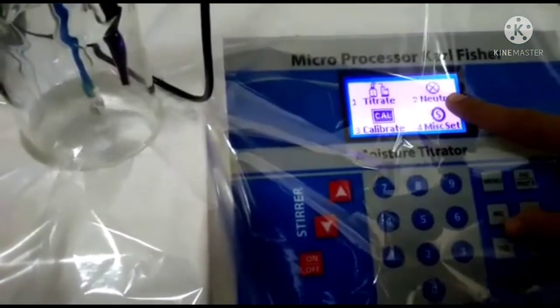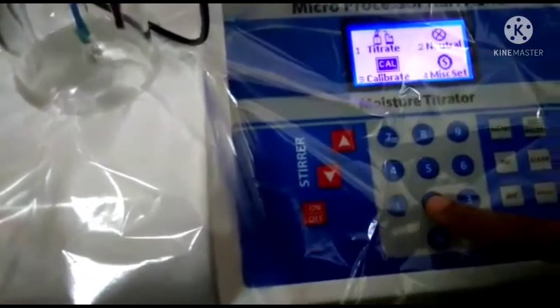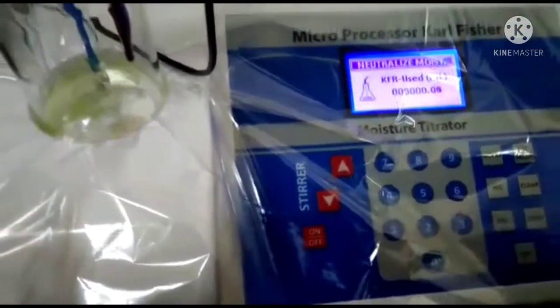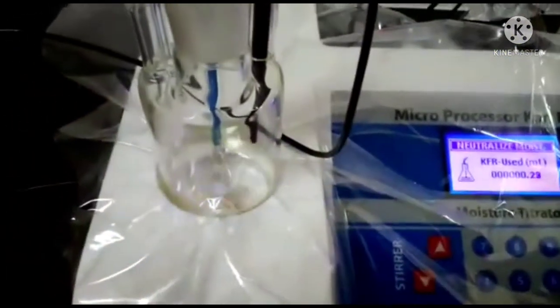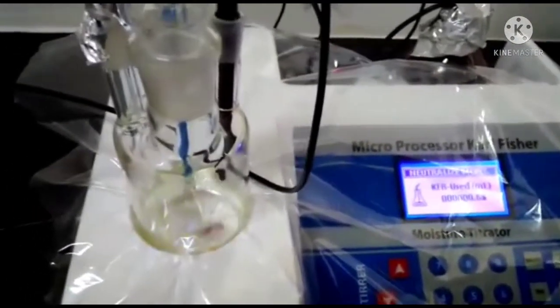For neutralization we have to press option number, as you can see neutralization is available on option number 2. We have to use the same key to start the neutralization. I am pressing option number 2 and now you can see the reagent is being added.